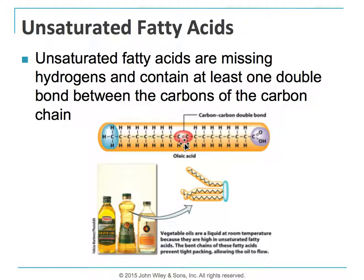Because these carbons are using up two of their bonds to bond with each other, they're not able to have those additional hydrogens on the top side of the molecule. When carbons have a double bond between them, it actually forms a kink in that chain.